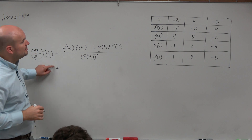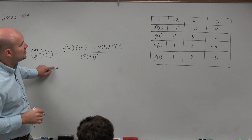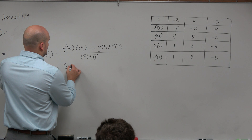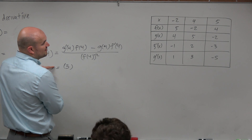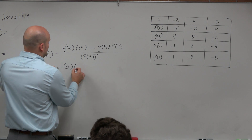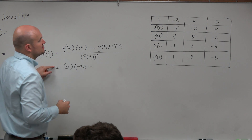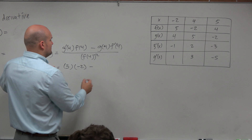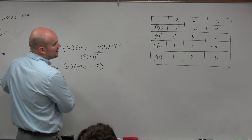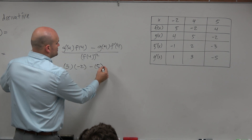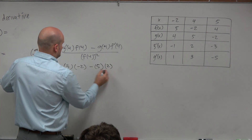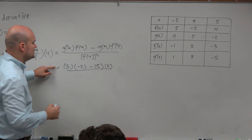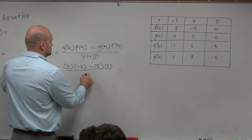So I'm going to go to our table: g prime of 4 is 3, times f of 4, which is negative 2, minus g of 4, which is 5, times f prime of 4, which is 2, all over f of 4, which is negative 2, squared.